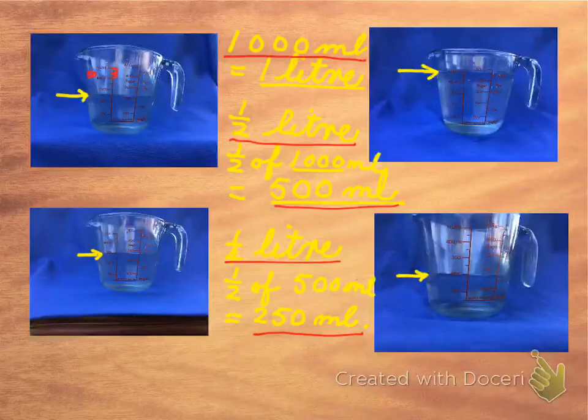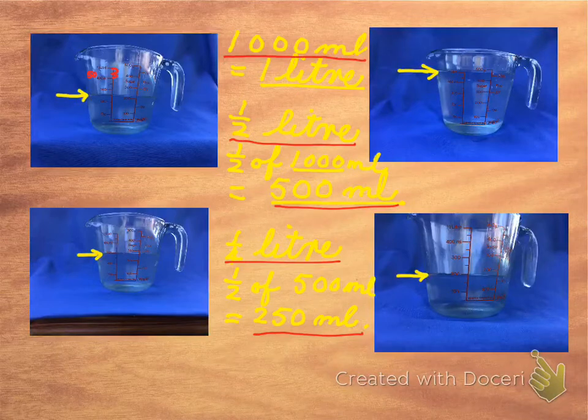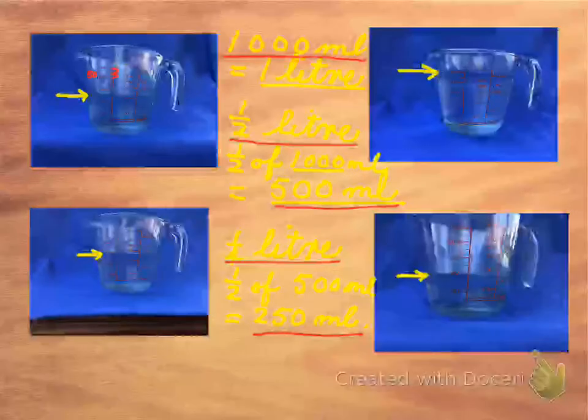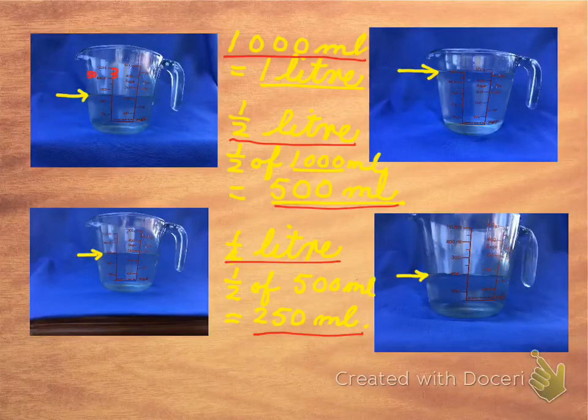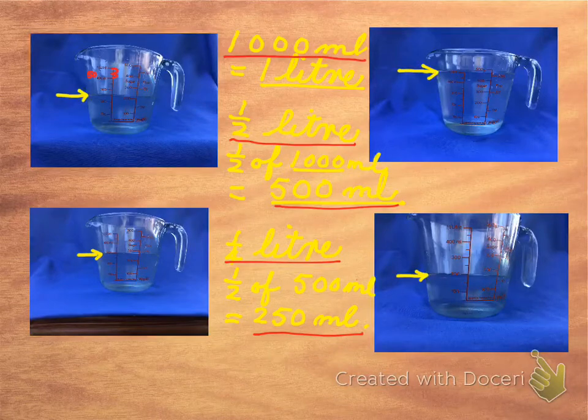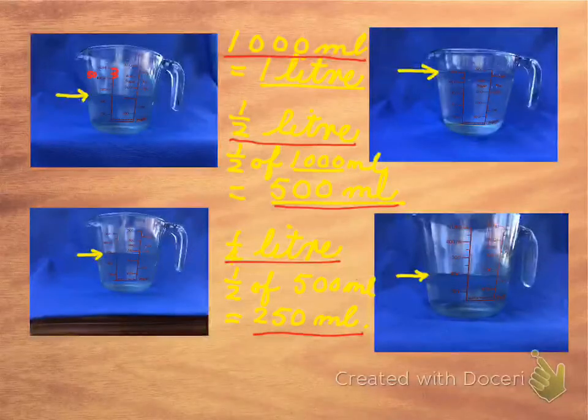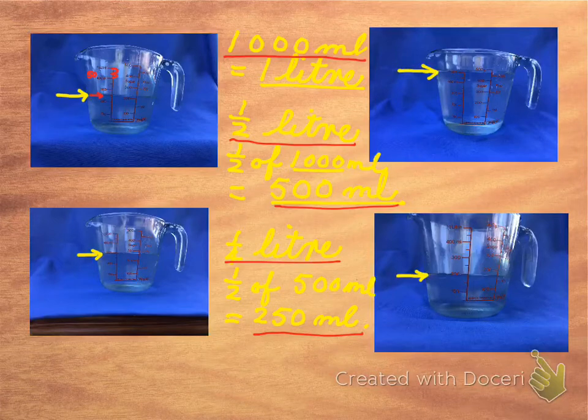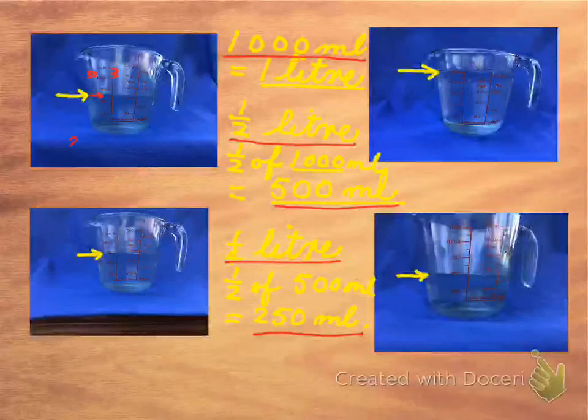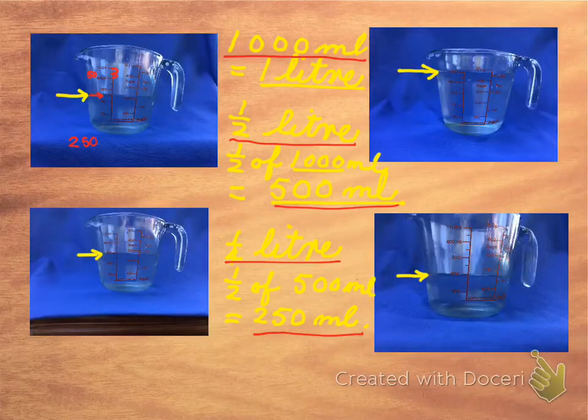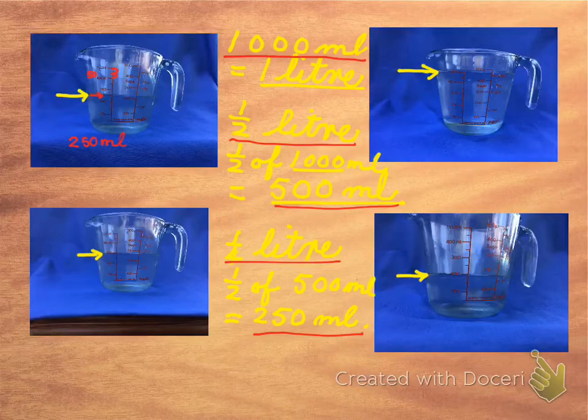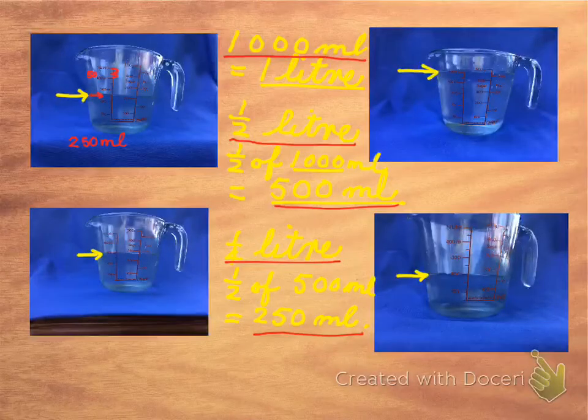The little lines in between the numbers so we can see how much altogether is contained. Like, for example, this one, we're halfway, can you see, we're halfway between 200 and 300. So that means 250 milliliters volume of water in this measuring jug.